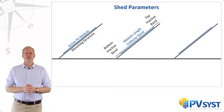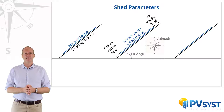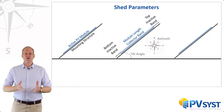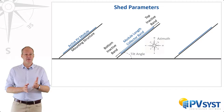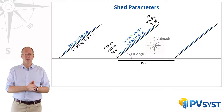Next, there is the orientation of the rows. Just as with other fixed-tilted plane systems, the tilt angle and the azimuth define the orientation. To simplify things, we can assume that all the sheds have the same orientation. Finally, there is the pitch, which is defined as the distance from the base of one row of modules to the next row of modules.